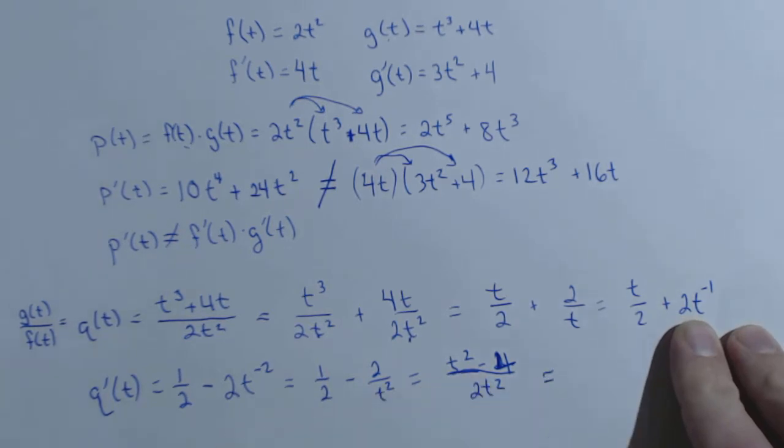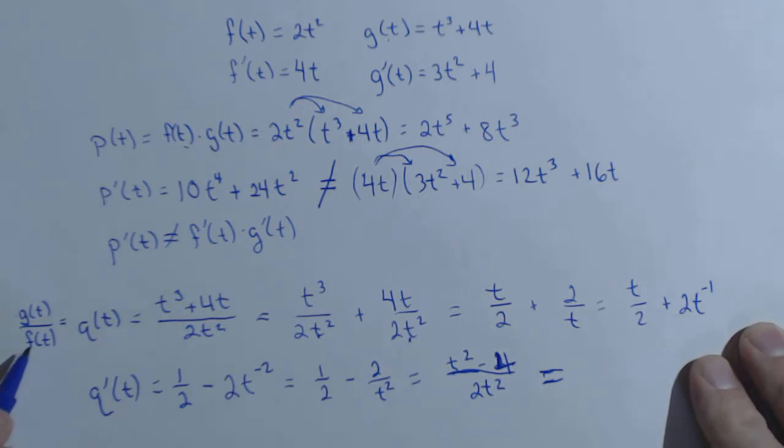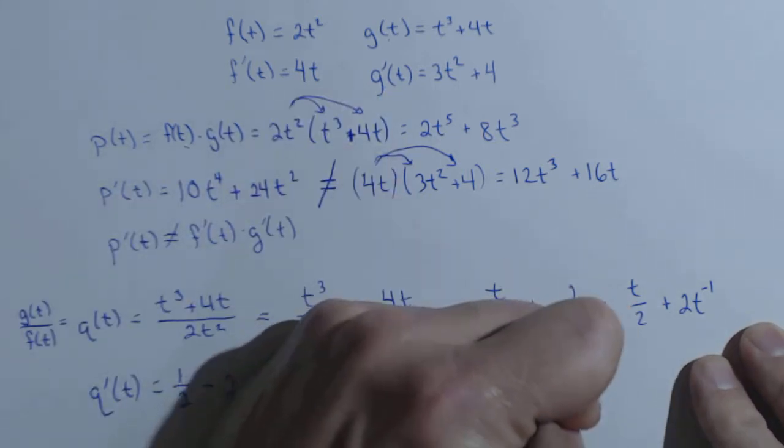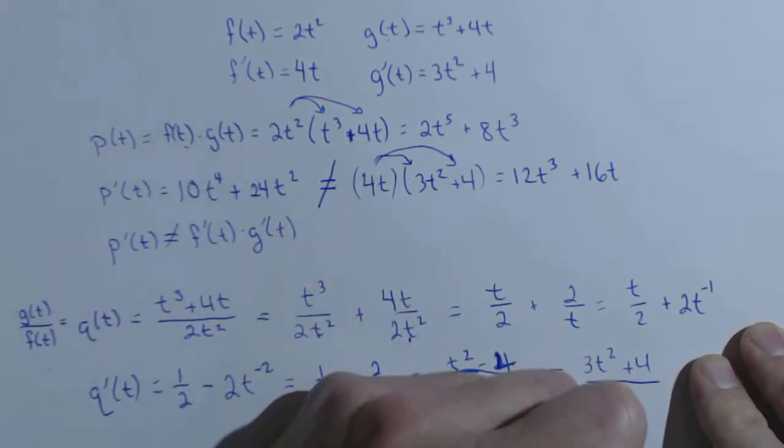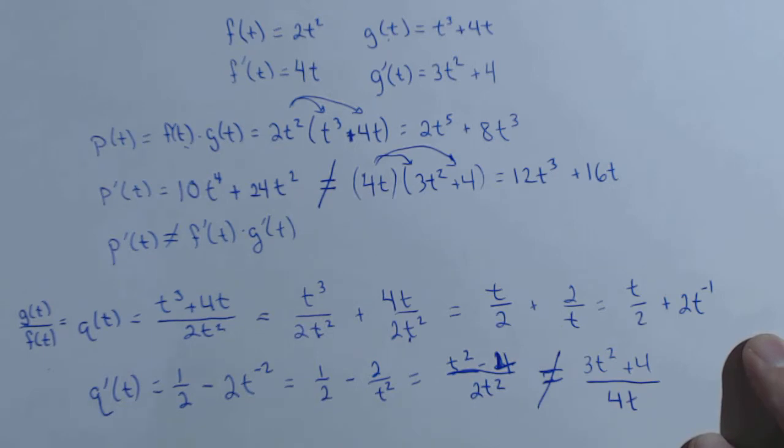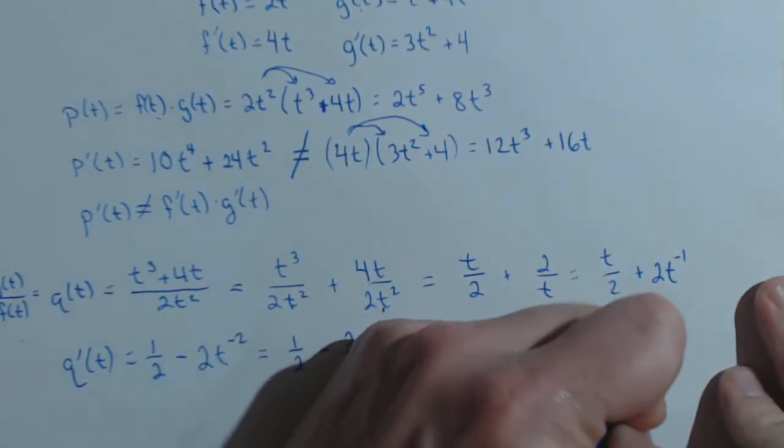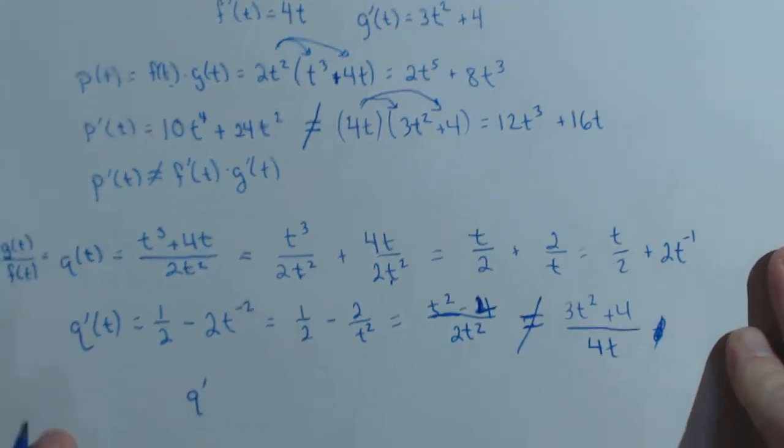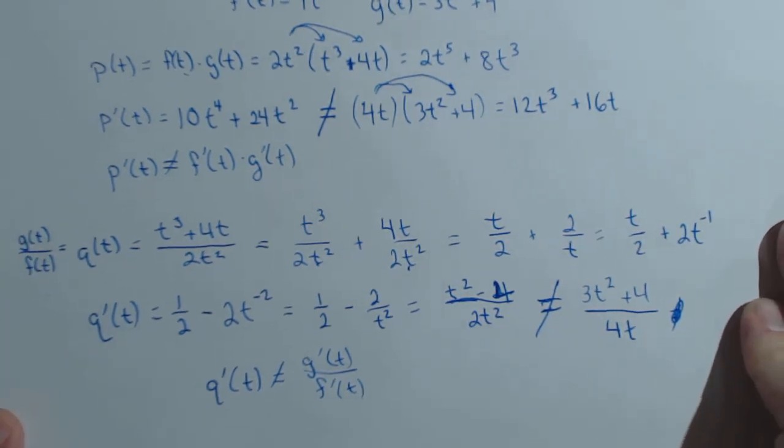Now again, the question is whether or not this is equal to g prime of t over f prime of t. g prime of t is 3t squared plus 4. f prime of t is 4t. These are clearly not equal. So q prime of t does not equal g prime of t over f prime of t, even though q of t was g of t over f of t.